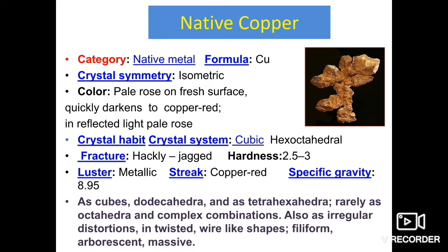The crystal habit occurs in the cubic or isometric system. Fracture is hackly. Hardness is 2.5 to 3. Basically, you have to identify each ore mineral on the basis of its distinguishing property, because each and every mineral has its distinguishing property on the basis of which it has been identified.